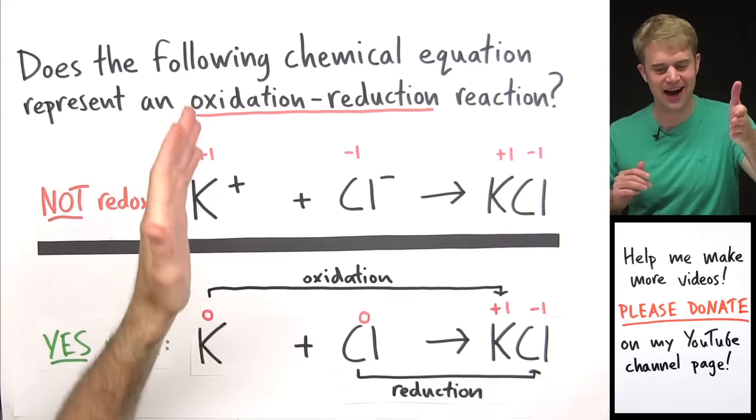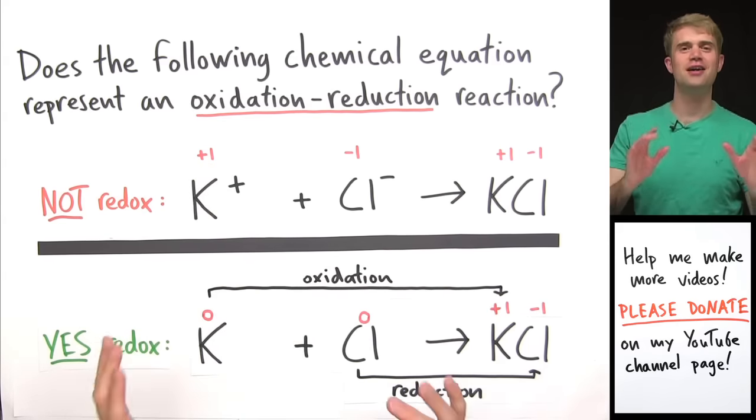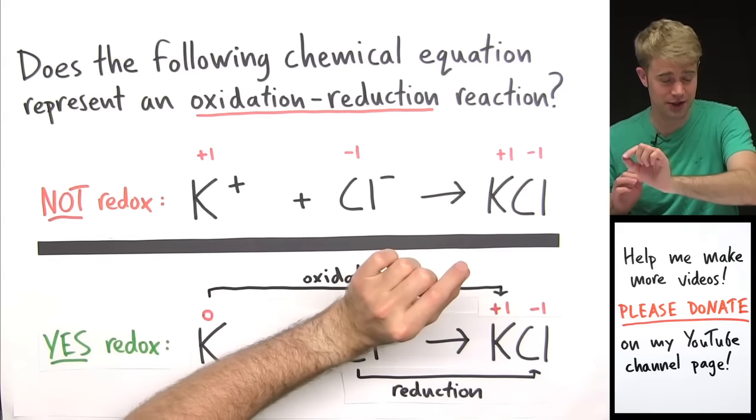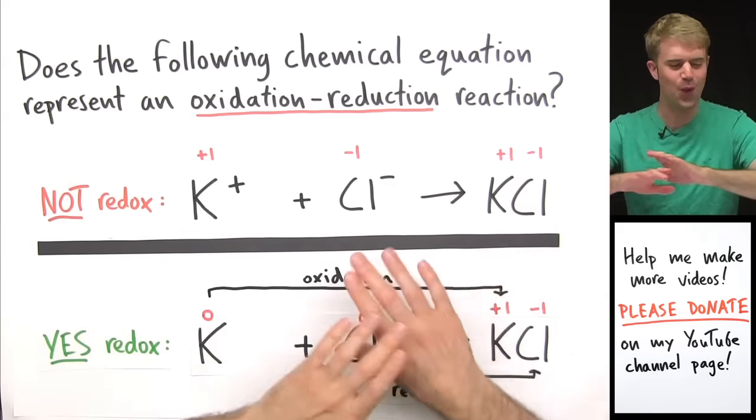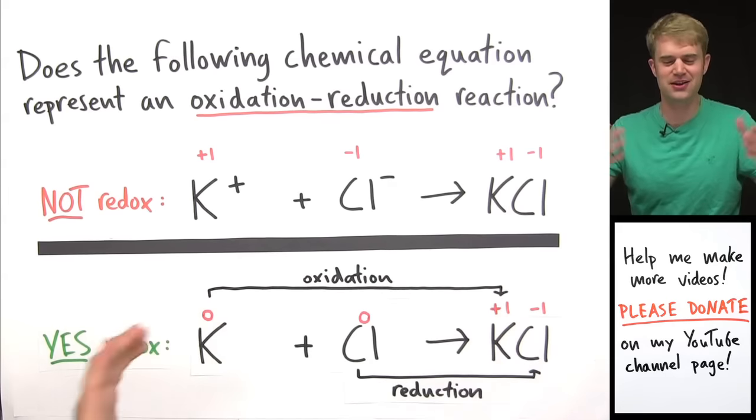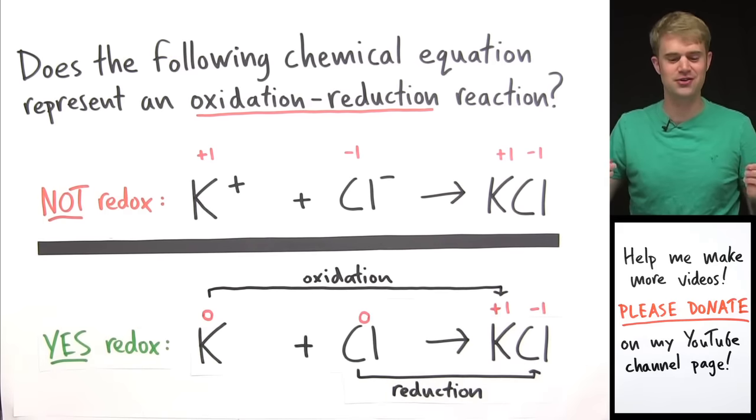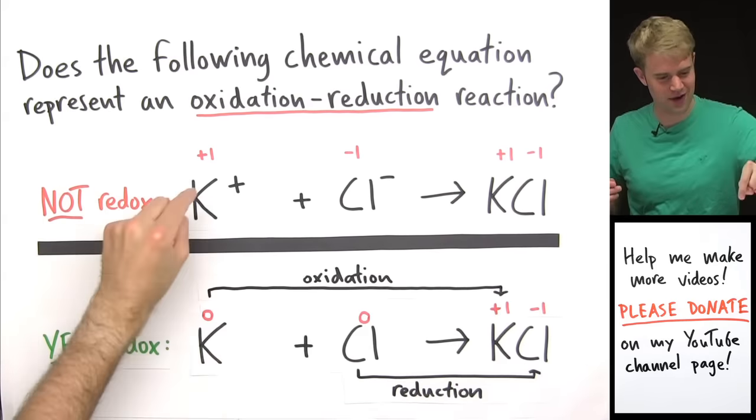just because an equation has pluses and minuses doesn't mean that it's an oxidation-reduction reaction. For something to be an oxidation-reduction reaction, you've got to see a transfer of electrons.